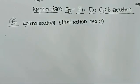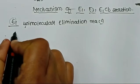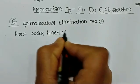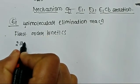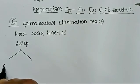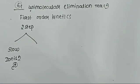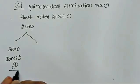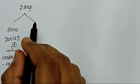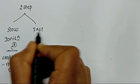This elimination reaction is a unimolecular reaction. It follows the first order kinetics. E1 reaction is a two step reaction. The first step is the slow ionization step, which forms the carbocation, and therefore this step is known as the rate determining step. The second step is the fast step.